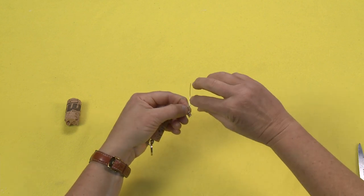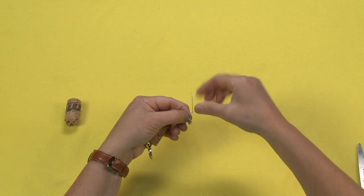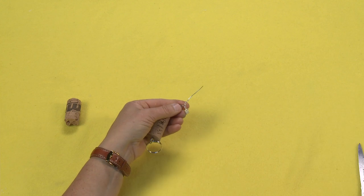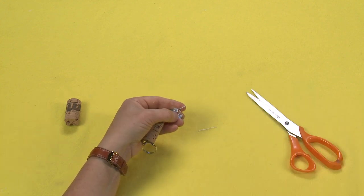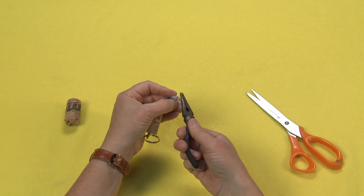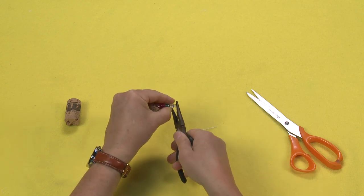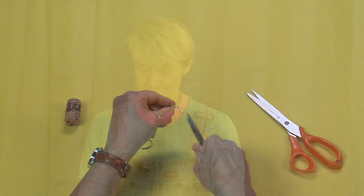Twist it off a couple times. I'm going to cut off the extra. And then I'm going to use my needle-nose pliers to fold this up onto itself and lock it into place.